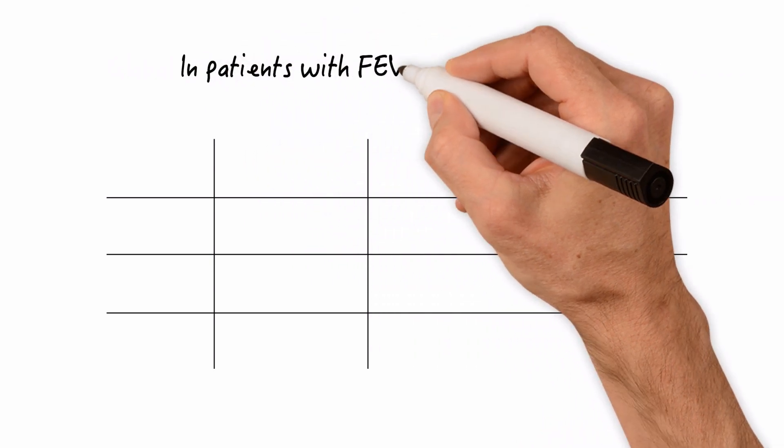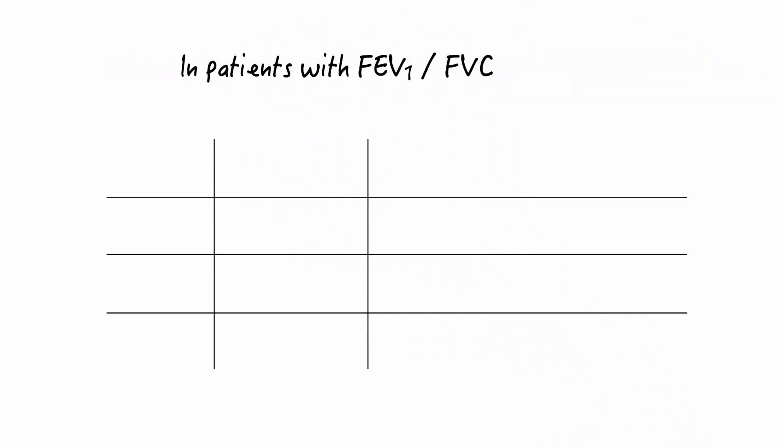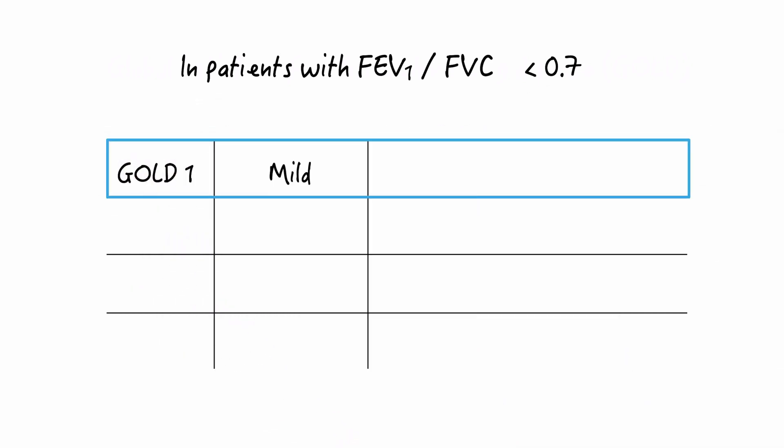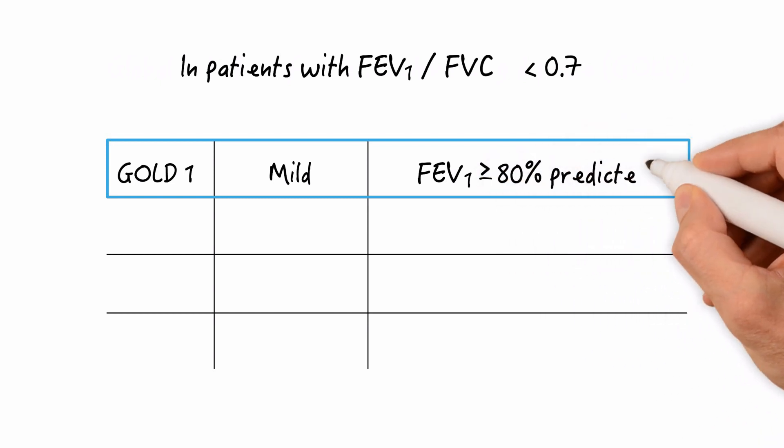which itself is defined as a post-bronchodilator FEV1 to FVC ratio of less than 0.7, mild disease, or GOLD one, is an FEV1 greater than 80% predicted.